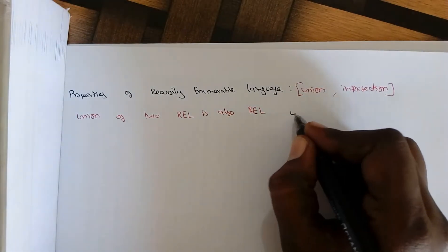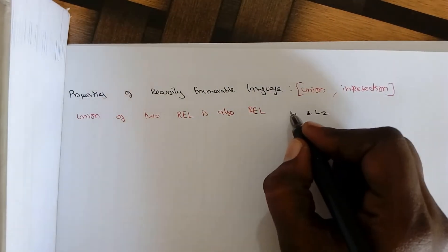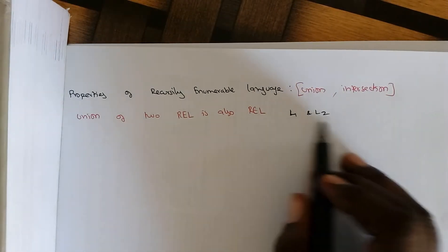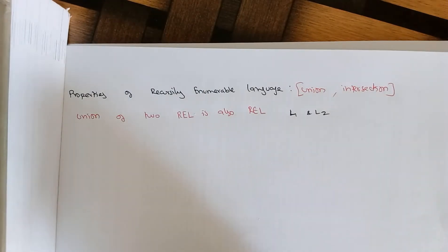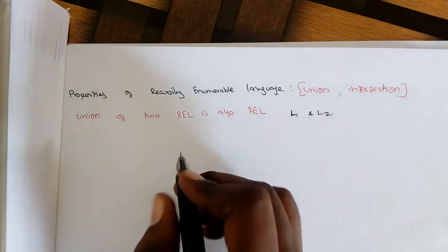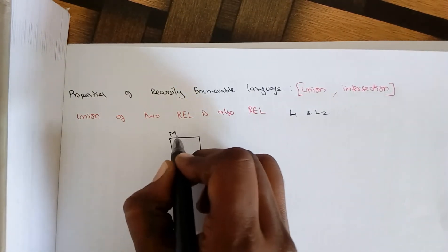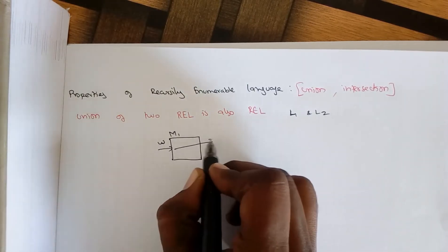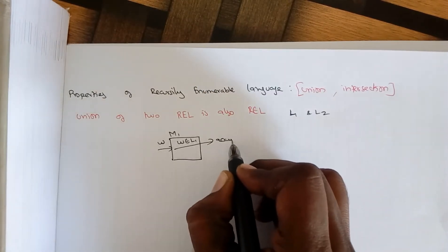Consider languages L1 and L2. For the union of these languages, an input either belongs to L1 or belongs to L2. A language is said to be recursively enumerable when it is accepted by a Turing machine. We construct a Turing machine M1 for language L1 — if the input belongs to L1, the machine accepts it.